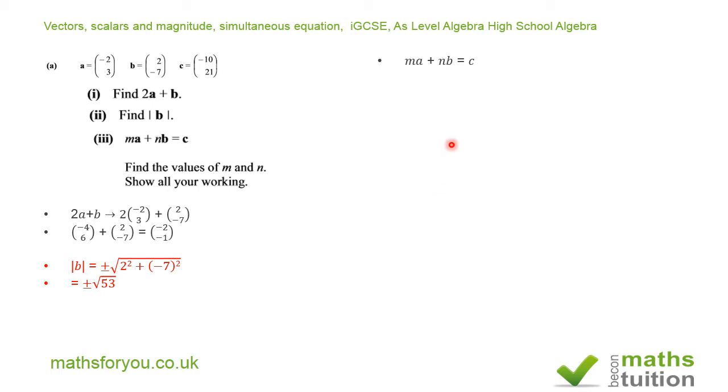Right. For section 3, we are given that MA + NB is equal to C, and we're supposed to find the values of M and N. Now, don't forget that M is a scalar. So if I bring this outside the bracket, I end up with M(-2, 3) + N(2, -7) = (-10, 21).